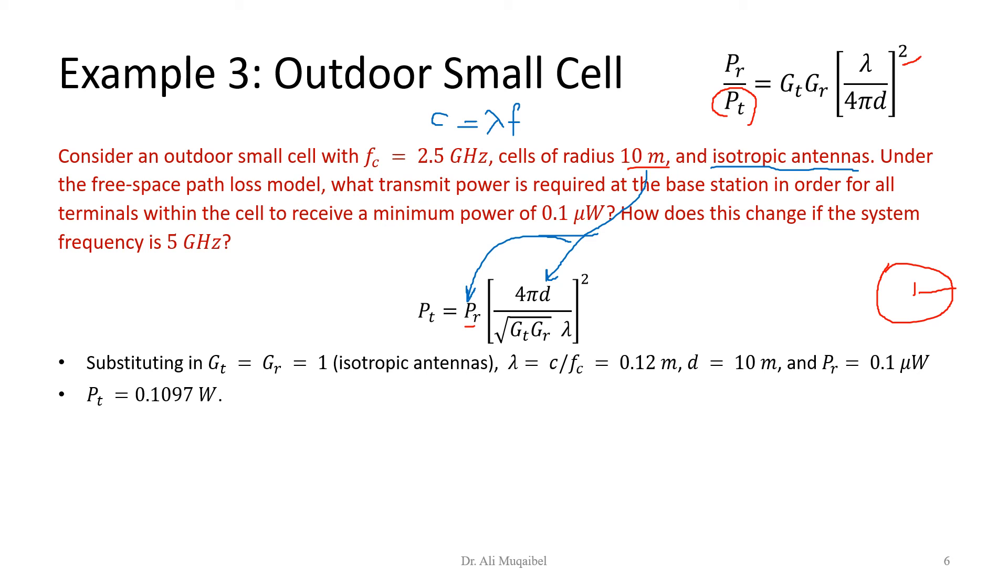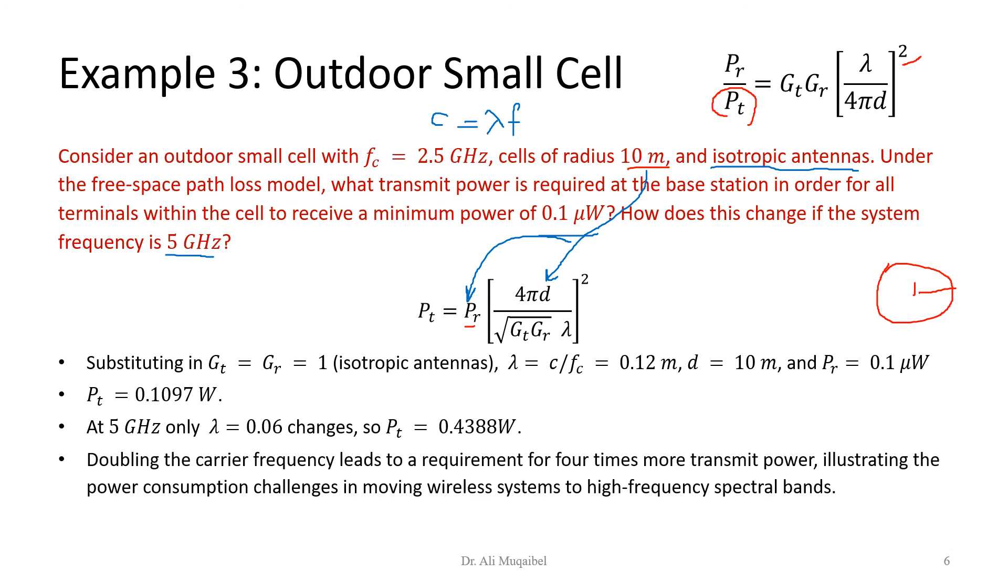Then the question says: how would this change if we take the frequency to 5 GHz? This means that λ is now going to become half, which means with the square, a factor of four. So the required power if you increase the frequency will have to be scaled by approximately four times, or four times exactly. Changing the frequency to higher frequency means we need to have more power pumped into the transmit antenna. This gives a good idea about the impact of which band we operate with and working at millimeter wave and high frequency. Remember that we're making things simple here and we're going to complicate things as we go. Doubling the current frequency leads to a requirement of four times more transmit power, illustrating the power consumption challenge in moving wireless systems to high frequency spectral bands.